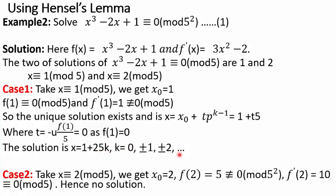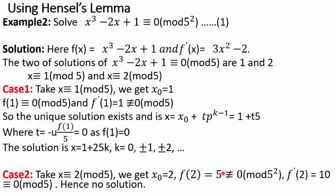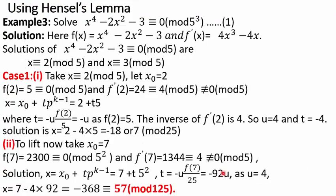Let's come to the second case where x ≡ 2 mod 5. We take x₀ = 2. When we substitute in our function, we get 5, which is not ≡ 0 mod 25. And the derivative at 2 comes out to be 10, which is ≡ 0 mod 5. So we have the third case — the derivative is ≡ 0 mod 5 but f(2) ≢ 0 mod 25 — so there is no solution. The same question has been solved so easily.